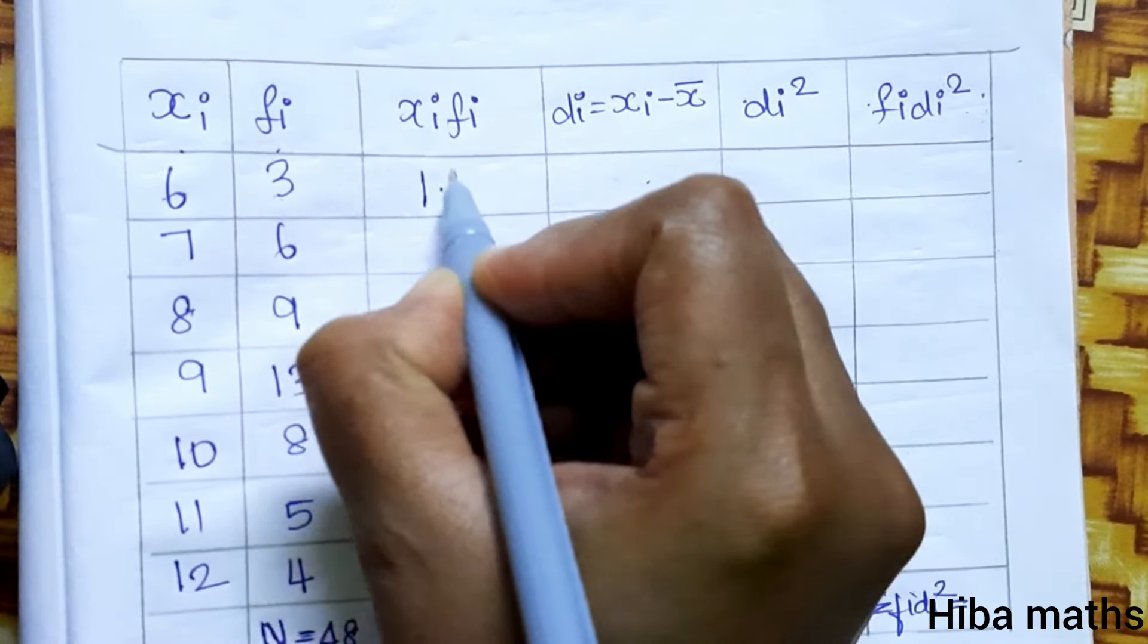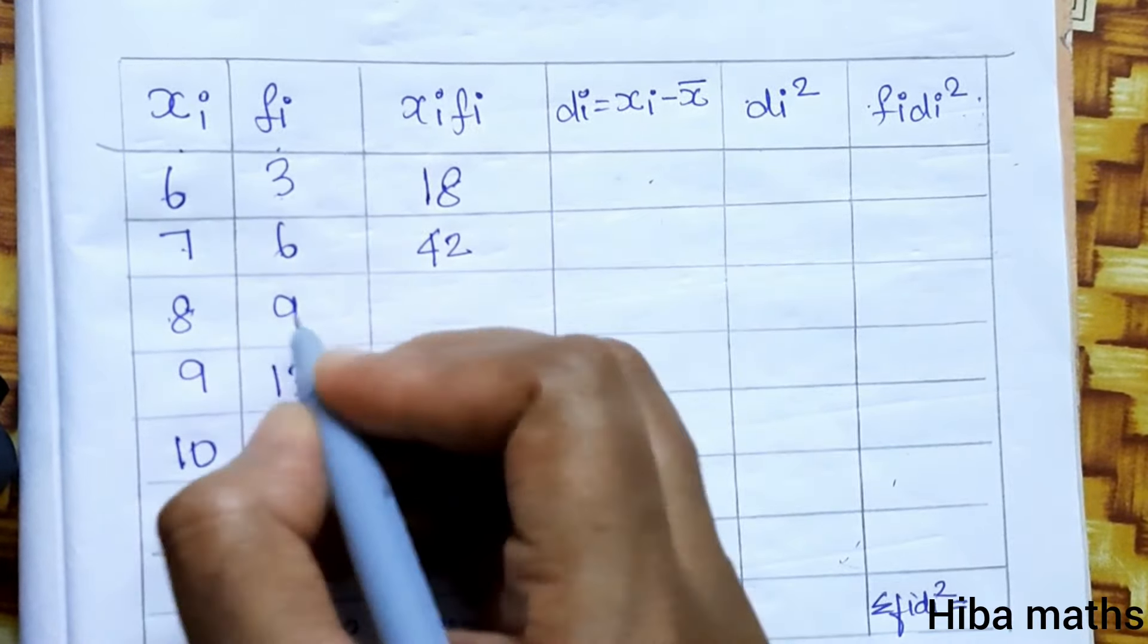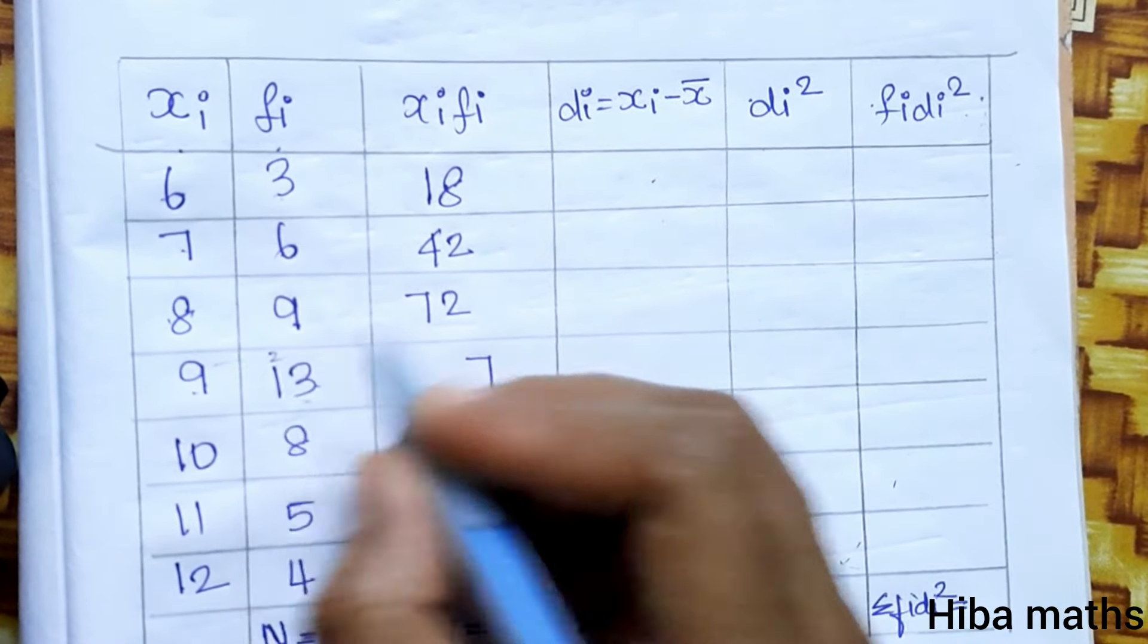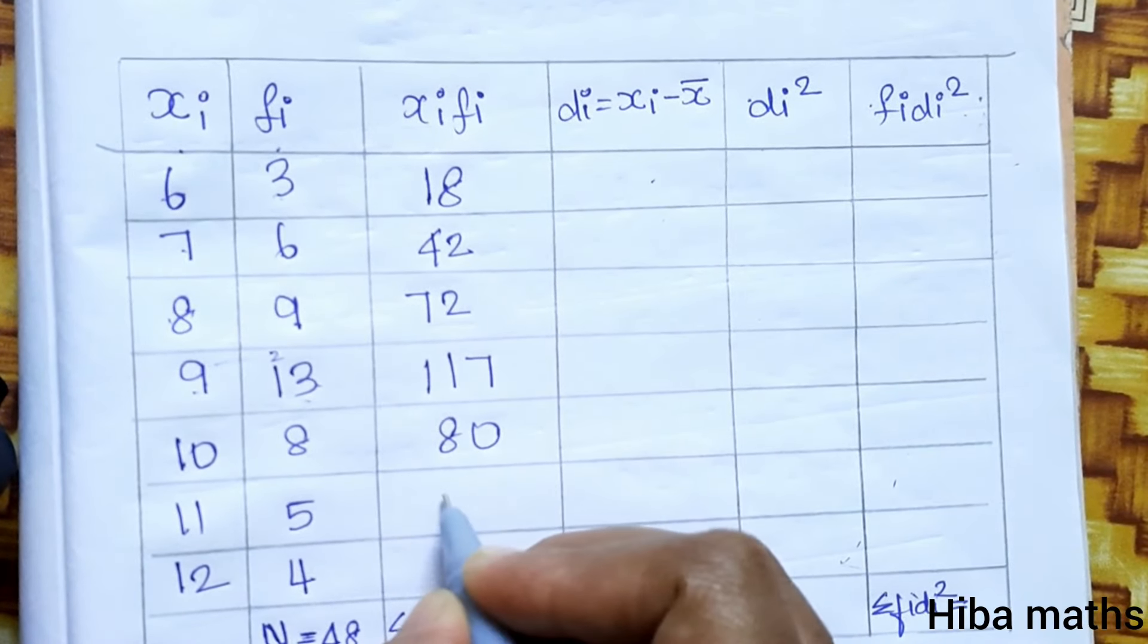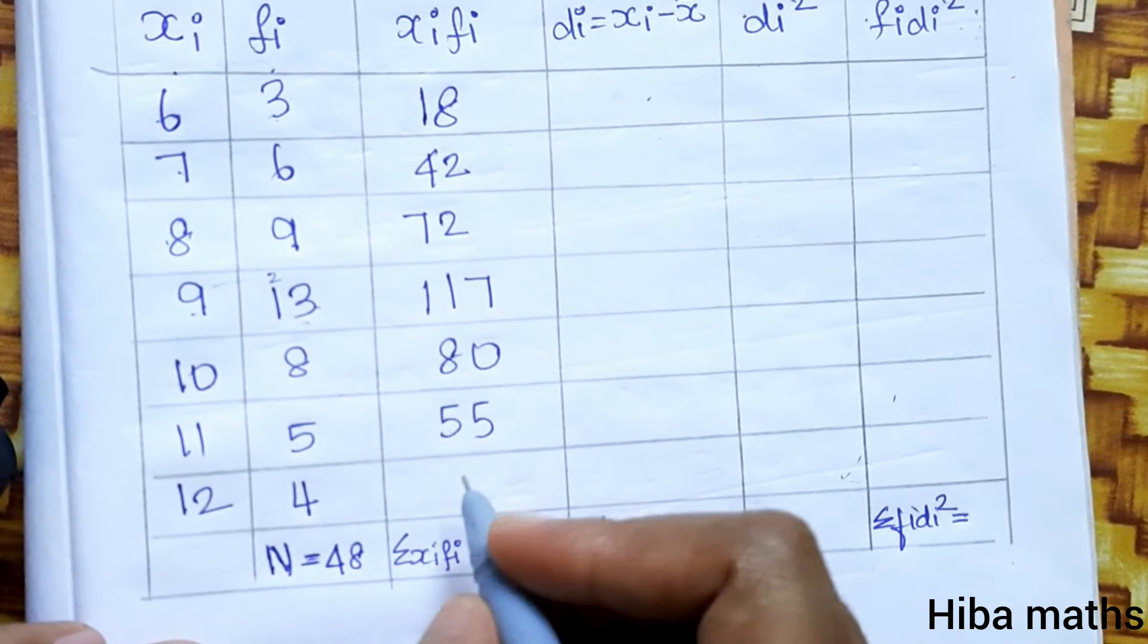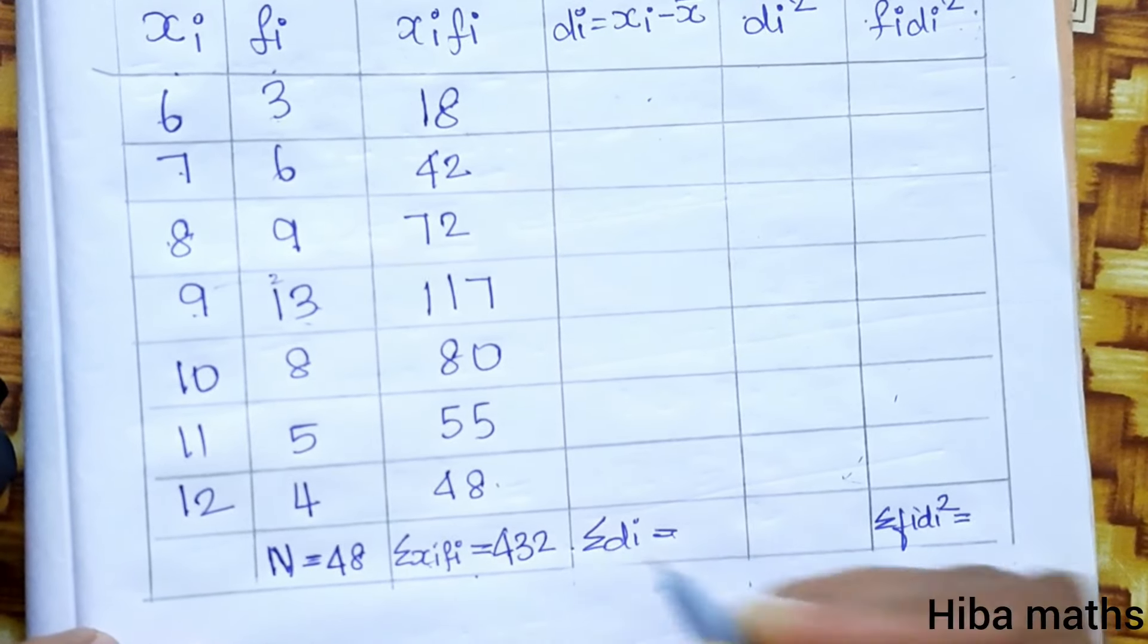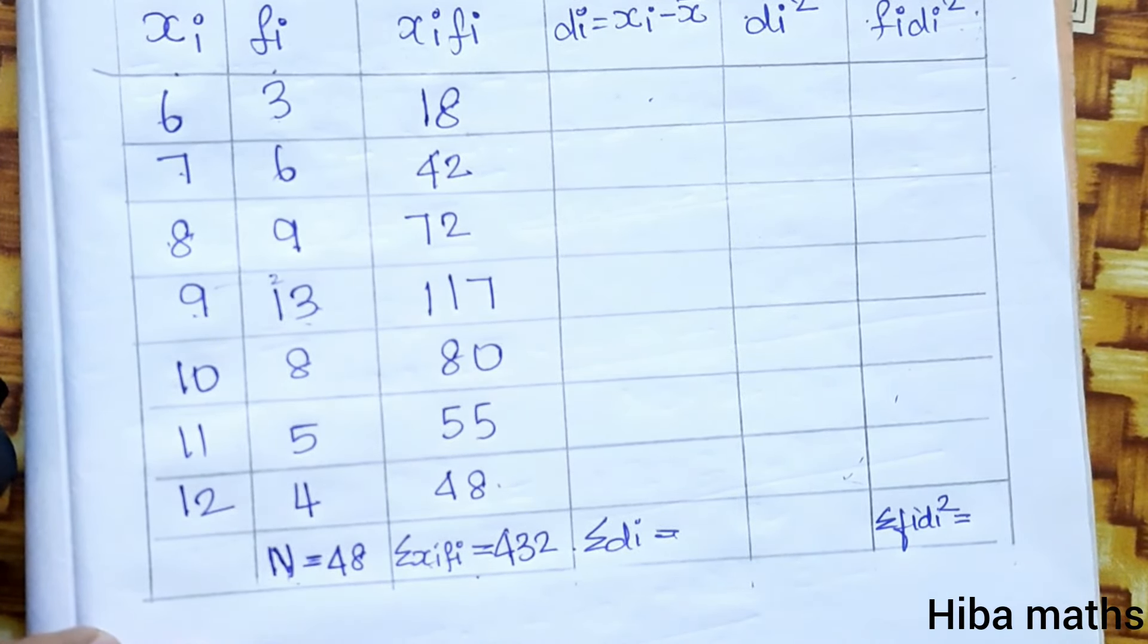Six times three is 18. Seven times six is 42. Eight times nine is 72. Nine times thirteen, balance two, nine times one is nine, equals 117. Ten times eight is 80. Eleven into five is 55. Twelve times four is 48. If we add all, we get 432, and fi sum gives us N.